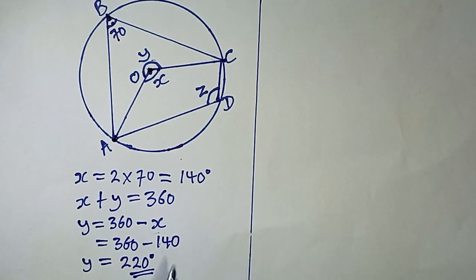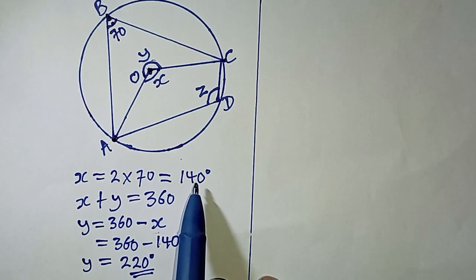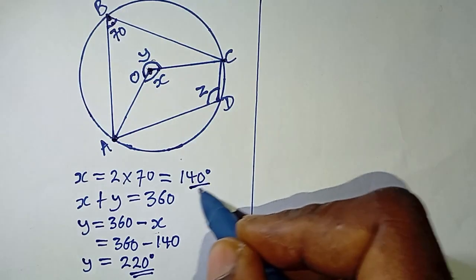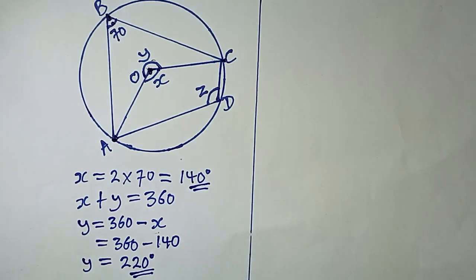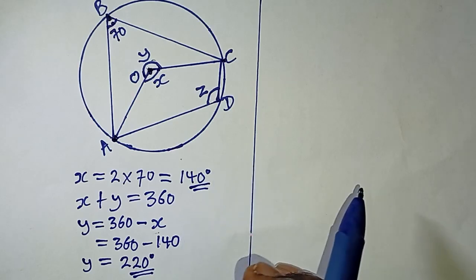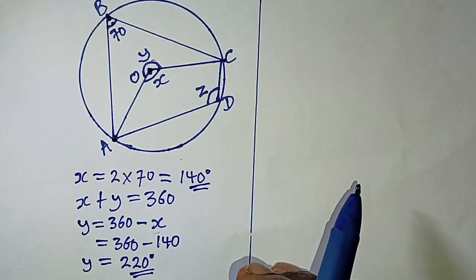We have now obtained x as 140 degrees and y as 220 degrees. Remember the theorems we have applied so far. Now let's move on to finding z.